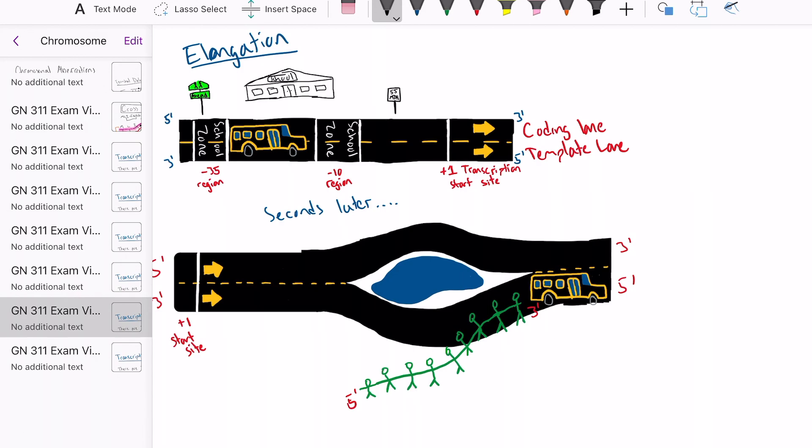Remember that the processes of transcription proceed in a five prime to three prime direction. Each child in the chain of drop-offs represents a nucleotide in the chain sequence.